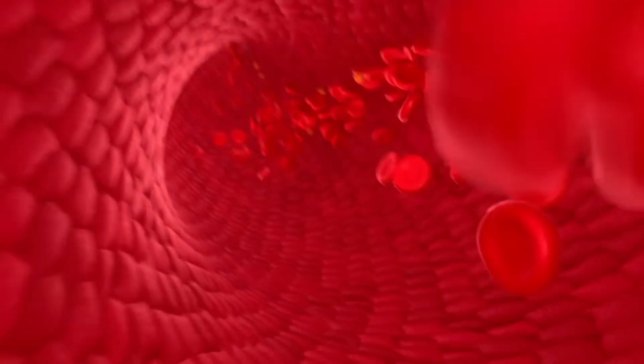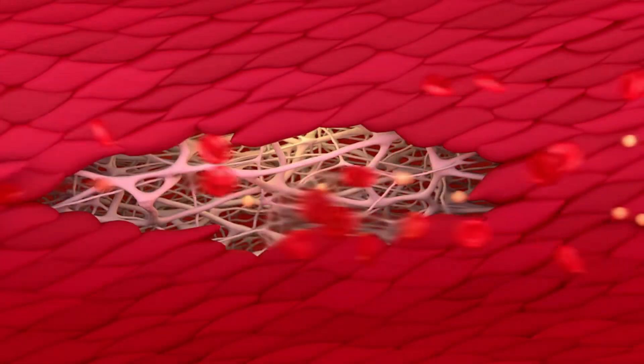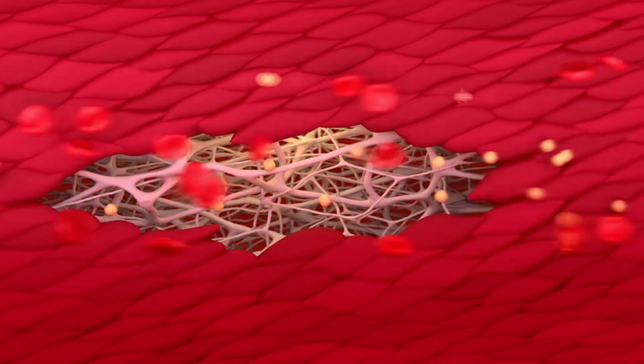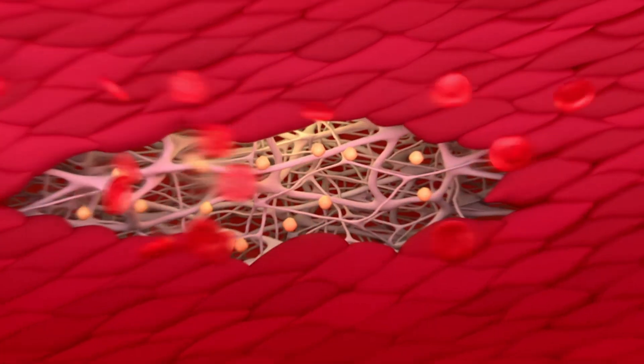Atherosclerotic plaque formation begins with a small injury to the endothelium, often caused by hypertension, high cholesterol, high blood sugar, or smoking. This allows cholesterol to migrate into the thickness of the vessel wall.